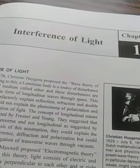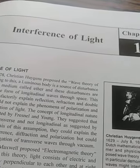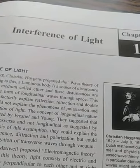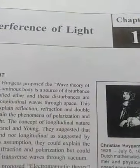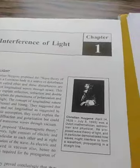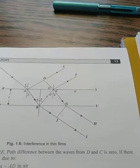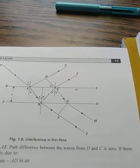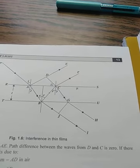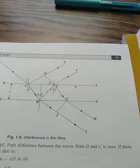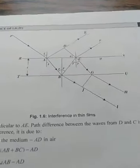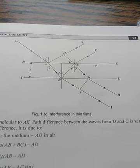In Newton's ring experiment and Michelson interferometer experiment, which are based on division of amplitude, there is always a requirement of a broad source of light so that the light coming directly from the source can be used. In case of interference based on division of wavefront, the light source must be small or fine. In the Fresnel biprism experiment, we always use a slit, while in Michelson interferometer or Newton's ring experiment, the light coming directly from the source is used.